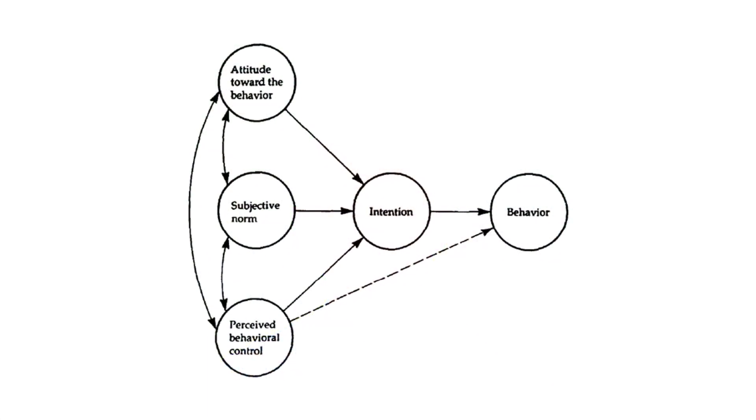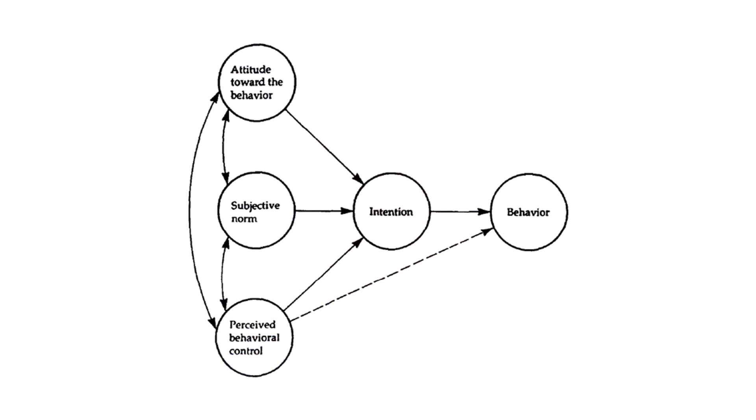So what is the theory of planned behaviour? At its core, TPB is a framework for understanding how attitudes, beliefs and social pressures influence behaviour. According to this theory, there are three main factors that influence behaviour: attitudes, subjective norms and perceived behavioural control. It's almost the same as the theory of reasoned action, but perceived behavioural control was added to recognise that individuals needed to believe that they were capable of doing the behaviour in question.